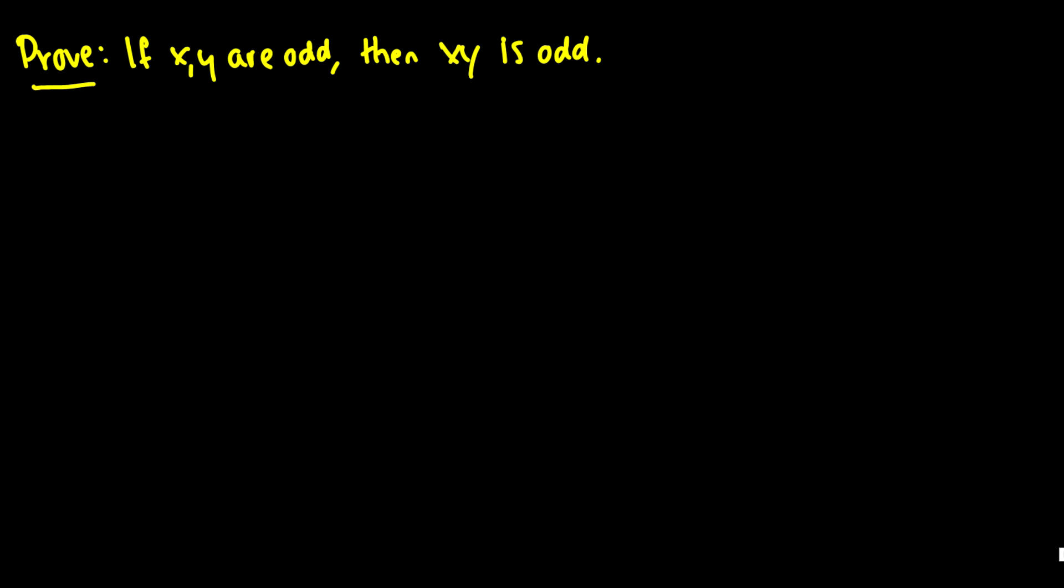I'm wondering if I have, oh yes, of course I have one more. There is a little section of direct proofs that I should cover now. I guess it's better to cover it now than later. But if we say if x comma y are odd, then xy is odd.